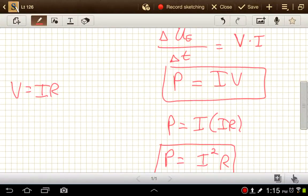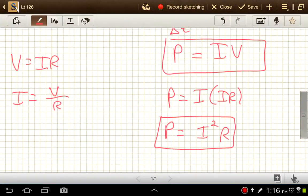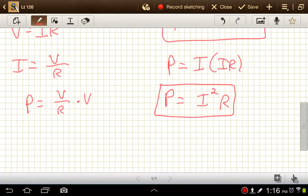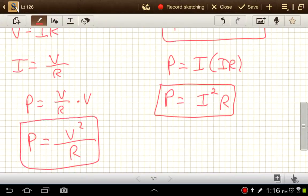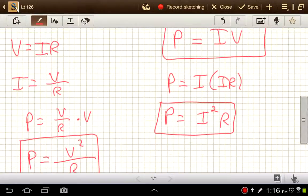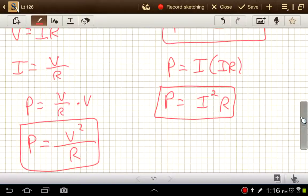Or, going back here, I could move the R to the other side and get I is equal to V over R, and I could plug this term in for I, and get that P is equal to V over R times V, so P is equal to V squared over R. So all three of these are ways to calculate the power dissipated by a resistor over some amount of time then.